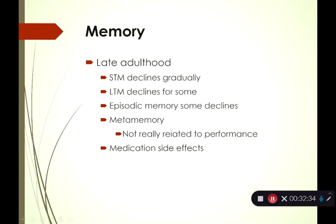An interesting thing to look at in late adulthood is metamemory. There are many negative stereotypes about memory in late adulthood — that older people are terrible at remembering things. A lot of older individuals believe these stereotypes and say their memory is horrible, yet when we look at actual memory performance, it's often not as bad as they predict. Their thoughts about their memory are frequently worse than their actual memory abilities. It's also important to note that some medications can have side effects that affect memory.